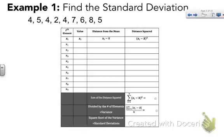I'm going to write these are my values, the actual elements in the set. This is just the number of elements in the set. So I'm going to write them in: 4, 5, 4, 2, 4, 7, 6, 8, and 5. The next column is the distance from the mean. So I'm going to subtract the mean from each one of those numbers. In this case our mean is 5.